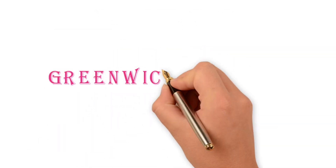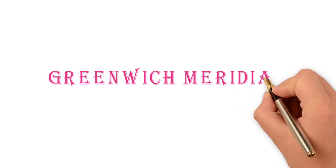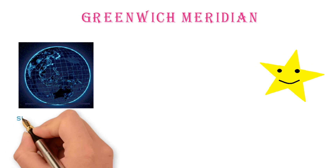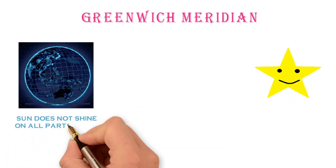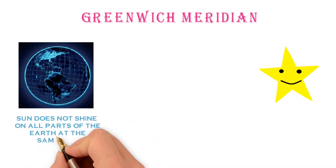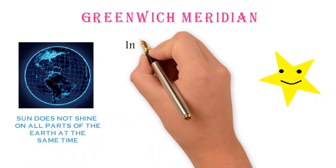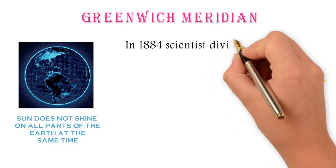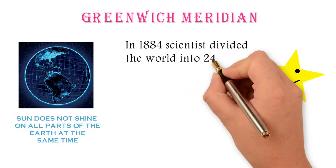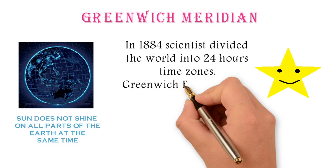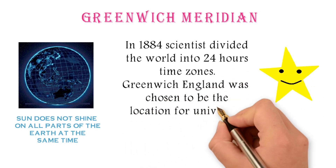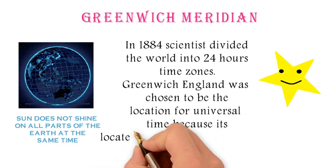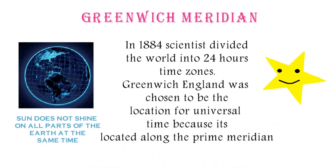Greenwich Meridian. The sun does not shine on all parts of the Earth at the same time. In 1884, scientists divided the world into 24 hour time zones. Greenwich, England was chosen to be the location for the Universal Time Zone because it is located along the Prime Meridian.